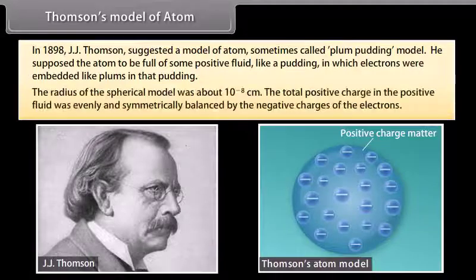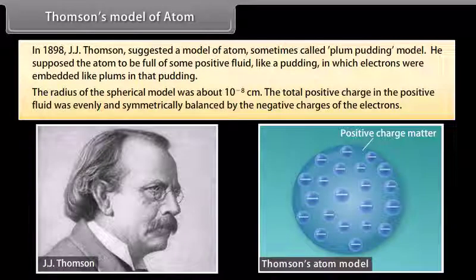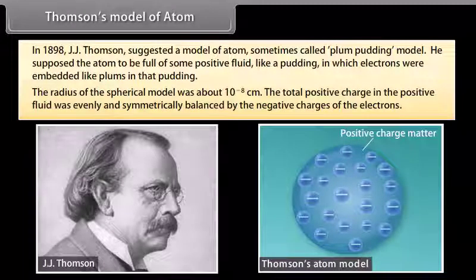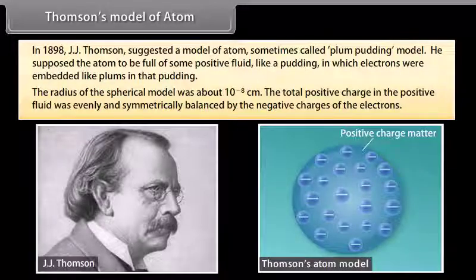The radius of the spherical model was about 10 raised to the power minus 8 centimeters. The total positive charge in the positive fluid was evenly and symmetrically balanced by the negative charges of the electrons. But this model was discarded because it failed to satisfy the results of experiments performed by Rutherford.